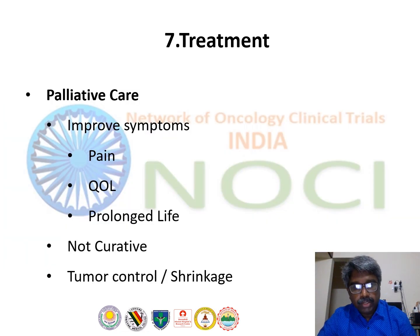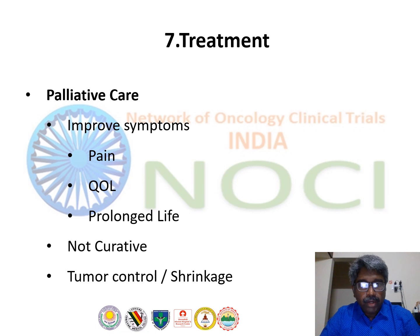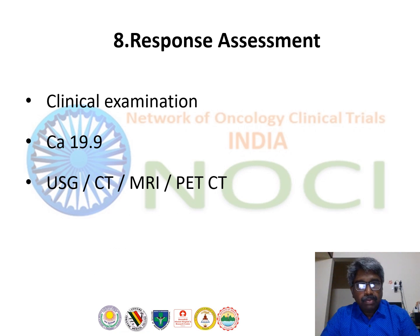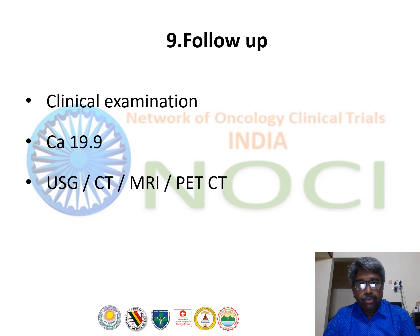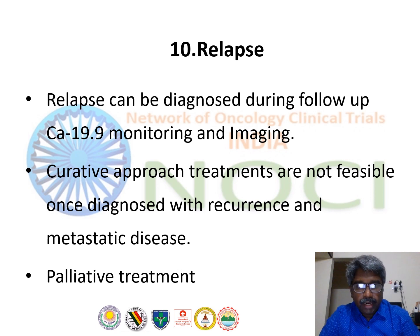Palliative care is always included in the management of pancreatic cancer to improve symptoms, provide pain relief, improve quality of life, and prolong life. By achieving tumor control and shrinkage, we can alleviate symptoms and improve the patient's clinical profile. Response assessment includes routine clinical examination, CA 19-9 monitoring, and imaging with ultrasound, CT, MRI, or PET-CT at four to six month intervals. Follow-up involves frequent clinical examinations, CA 19-9 monitoring, and imaging; relapses can be diagnosed during these assessments.